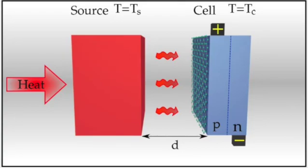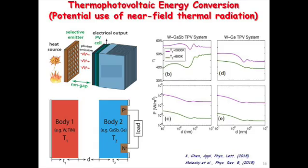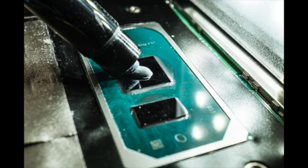A new thermophotovoltaic cell generates more energy from heat than a steam turbine. A solid-state thermophotovoltaic heat engine created by MIT researchers may run at greater temperatures and generate more electricity from heat than a typical steam turbine.